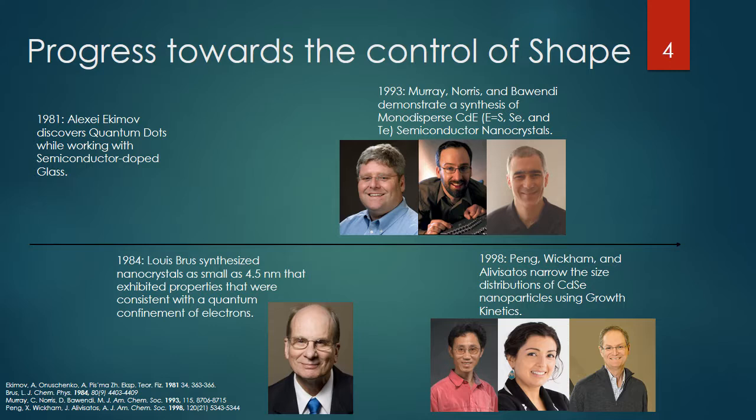This whole process started in 1981 with Alexei Ekimov, who discovered quantum dots while working with semiconductor-doped glass. He was working with this bulk product in glass and was seeing different colors that the glass was exhibiting. These different colors were based on the quantum dots present in the glass, and he was able to discover and quantify that these were the reason why the color was changing.